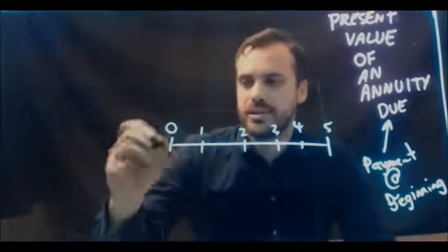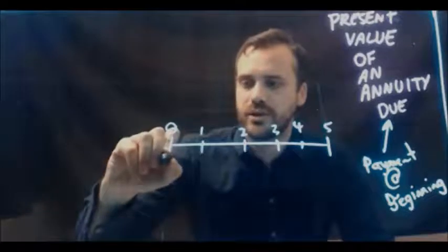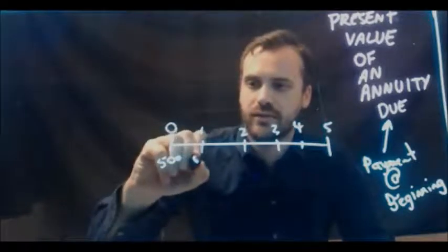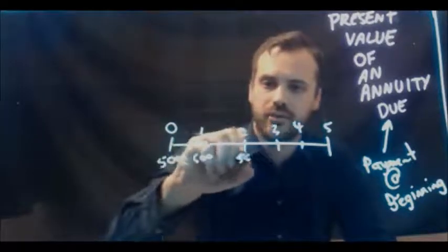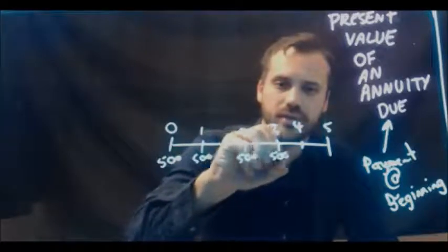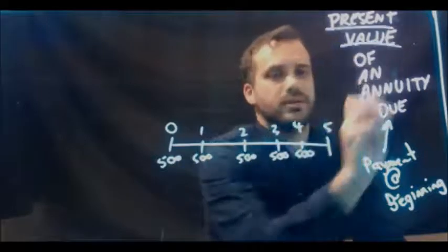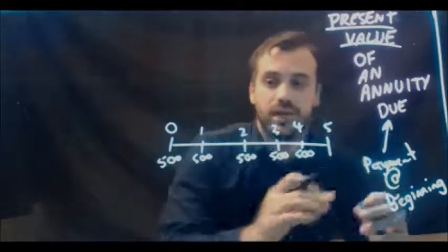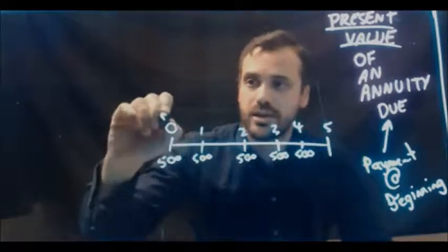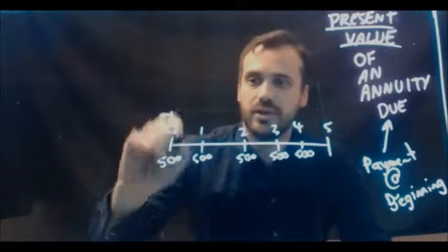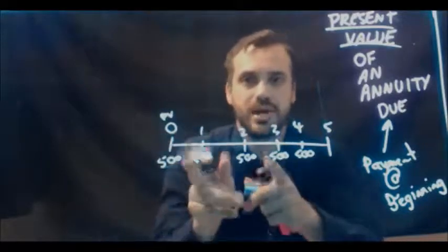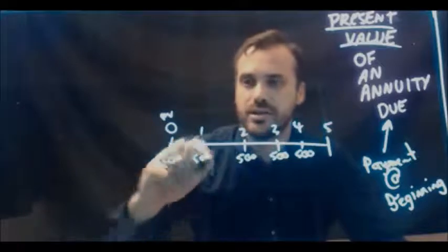And our payments, let's make them $500. So $500 at the start, $500 here, $500 here, $500 here, and $500 here. Now the important thing to realize is that you're looking for the present value, not the future value. So the present value here, here's the present value right there.